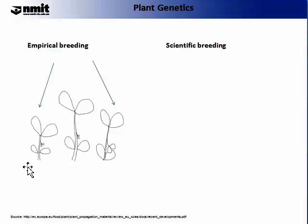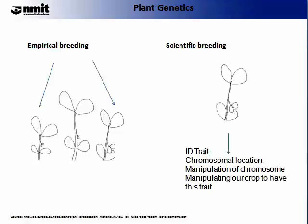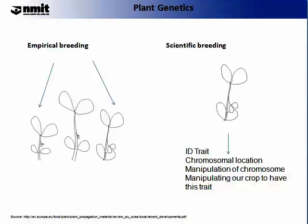Therefore, the grower would take this parent and cross it with another parent to produce new offspring. Scientific breeding, however, would take this individual, identify the trait or traits that result in the larger fruit, locate those traits on the chromosome, manipulate the chromosome, and thus introduce that trait back into the desired individual. And these are how these two different types of breeding differ.